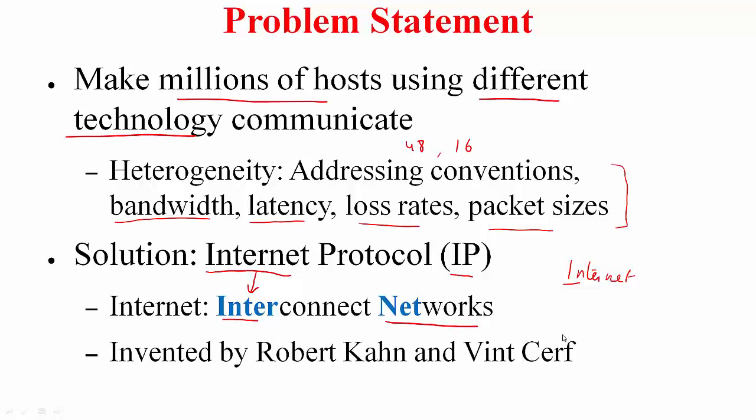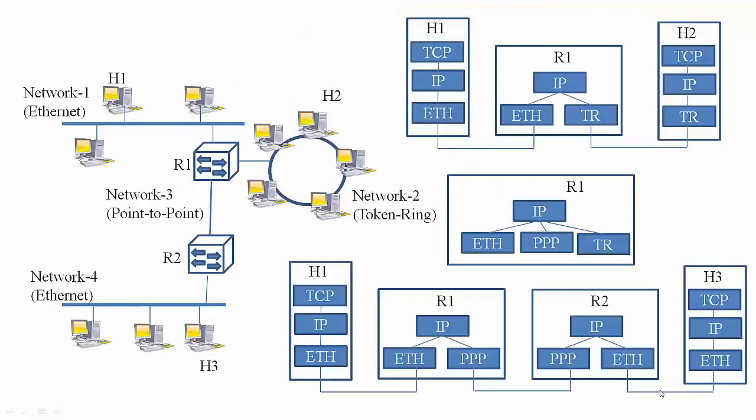Now the credit for designing this particular protocol goes to these two people, Robert Kahn and Vint Cerf. This figure shows multiple networks interconnected via network switches. These network switches, R1 and R2, are called routers henceforth. If you look at router R1, it is interconnecting three different networks: Ethernet, token ring, and the point-to-point link.